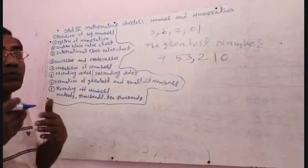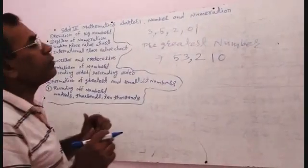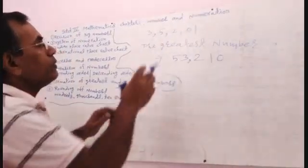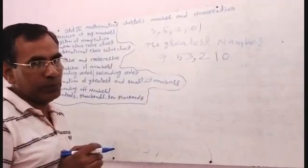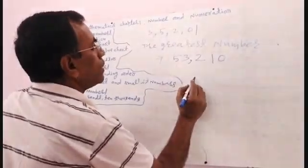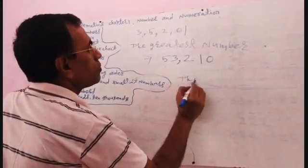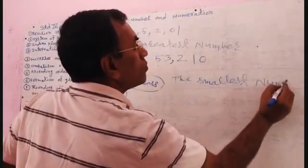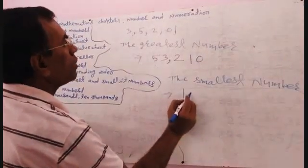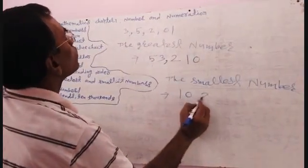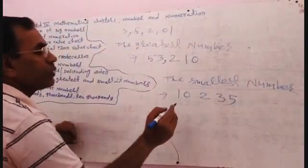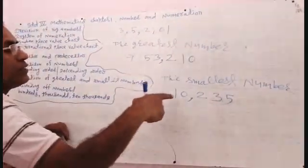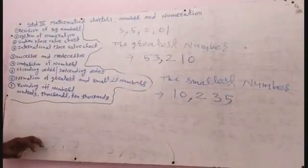Now I am arranging the smallest number. The smallest number means you write zero first, but if you write zero first it becomes only a 4-digit number. So first you write 1 (the smallest non-zero digit), then 0, 2, 3, 5. Arranged according to the Indian place value chart: 10,235.